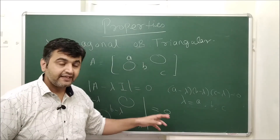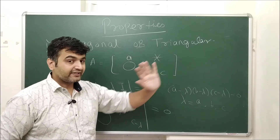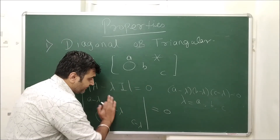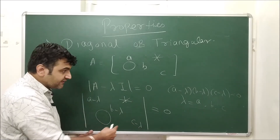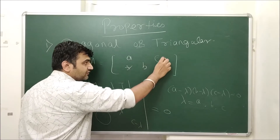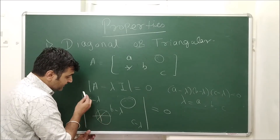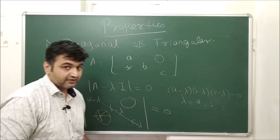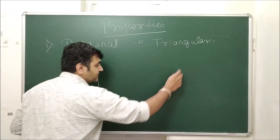Similarly, for an upper triangular matrix — where entries below the diagonal are 0 — the determinant is still the product of the diagonal entries. The same holds for a lower triangular matrix, where entries above the diagonal are 0. In all cases we get the same characteristic equation and the eigenvalues are A, B, and C.